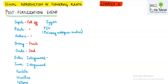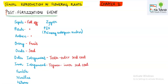The outer integument, meaning the outer coat of the ovule, will transform into the outer seed coat, which is named testa. The inner integument will form the inner seed coat, which has a specific name: tegmen. The funicle, which was seen in the ovule, will stay as funicle only. The nucellus cell, if it remains in the seed, will be known as perisperm.